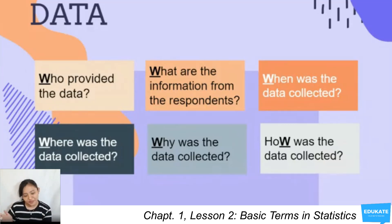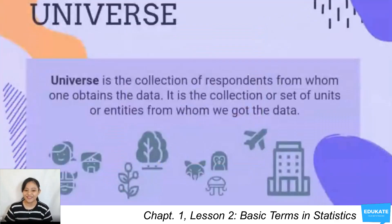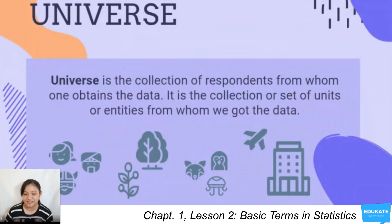Let's move on to the second term, which is universe. So what makes up the universe? In statistics, universe is the collection of respondents, not the whole Milky Way universe. In statistics, universe is the collection of respondents from whom one obtains the data. It is the collection or set of units or entities from whom we got the data from.